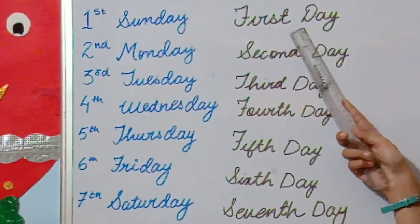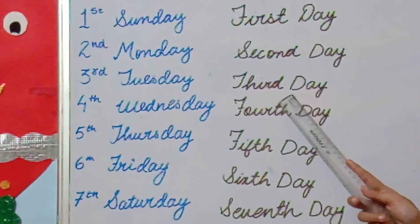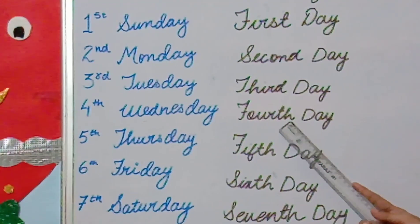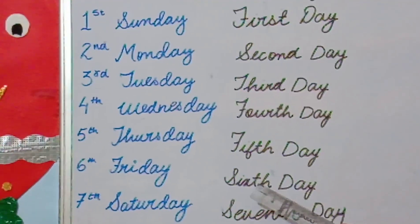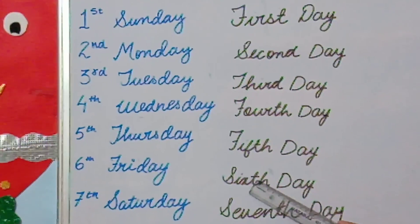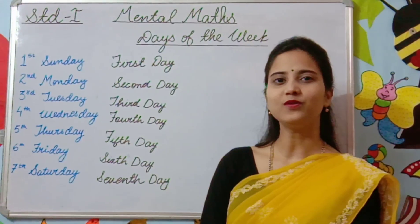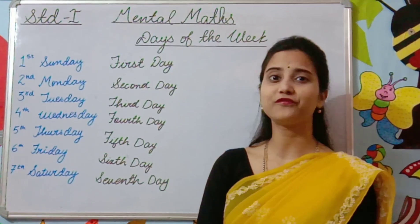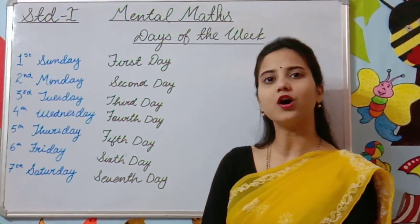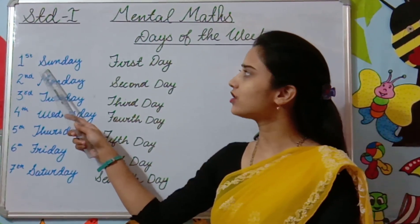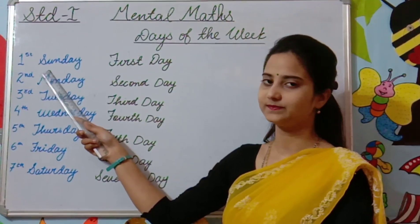The first day is Sunday, the second day is Monday, the third day is Tuesday, the fourth day is Wednesday, the fifth day is Thursday, the sixth day is Friday, and the seventh day is Saturday.